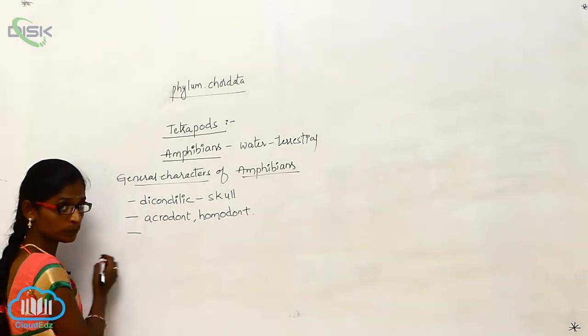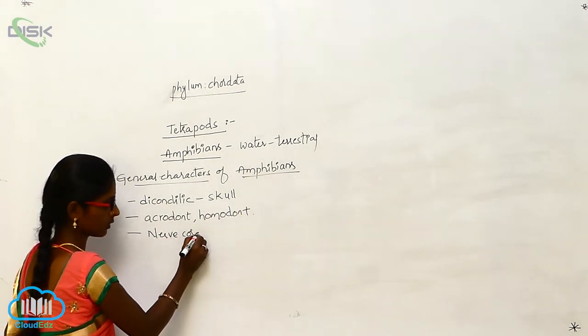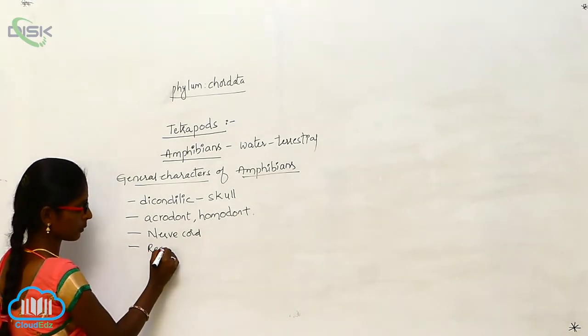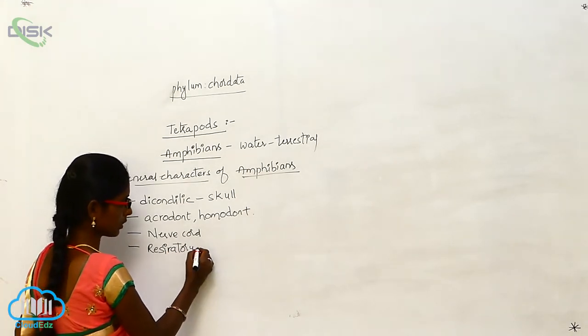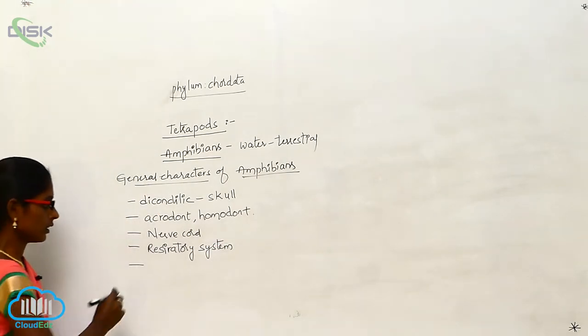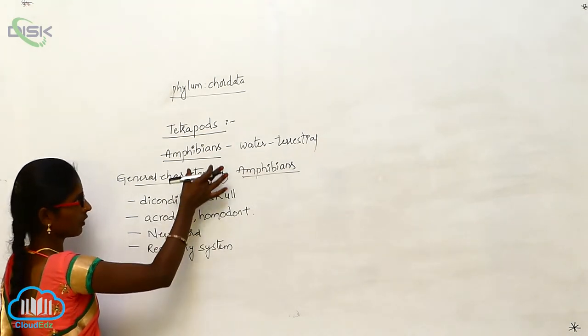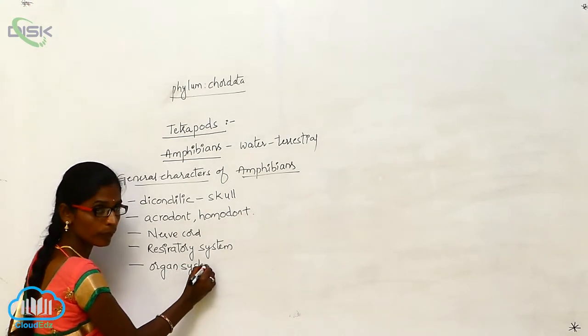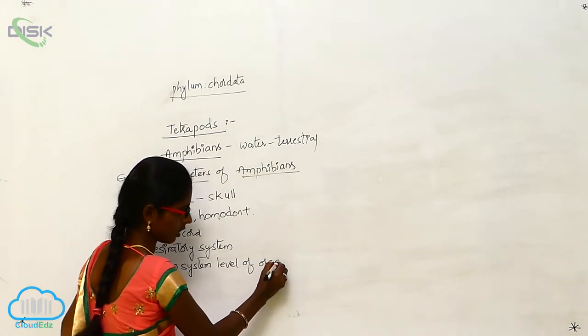So in this nerve cord is present. And respiratory system will be highly developed. And this is the organ system. These amphibians exhibit organ system level of organization.